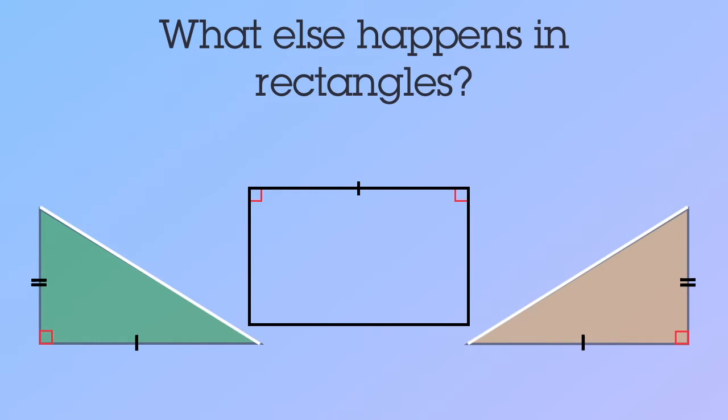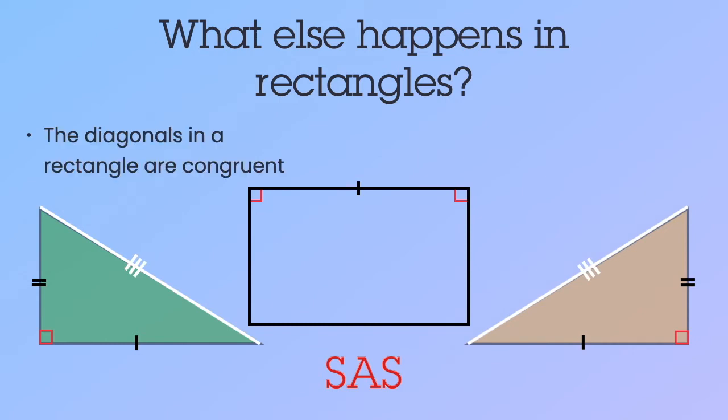When we compare these triangles, you'll notice we have two sets of congruent sides, and then the congruent angles are the included angles. So these two triangles are congruent by side angle side, meaning that the corresponding parts of these congruent triangles are also congruent. So the diagonals in a rectangle are congruent.